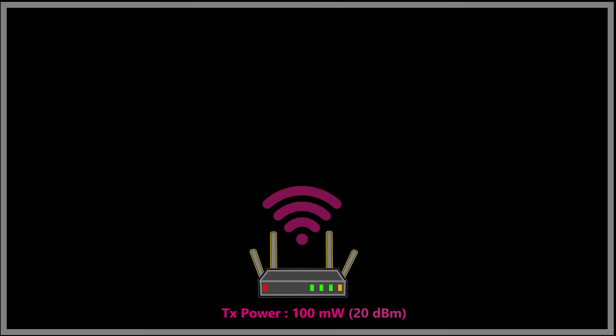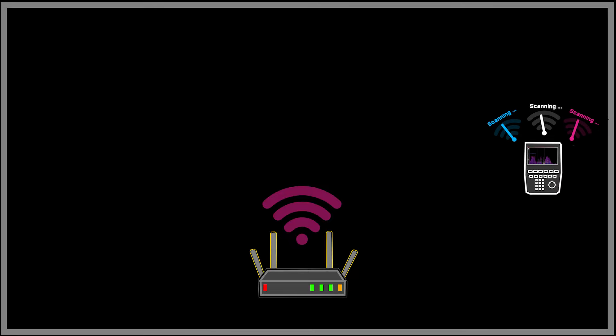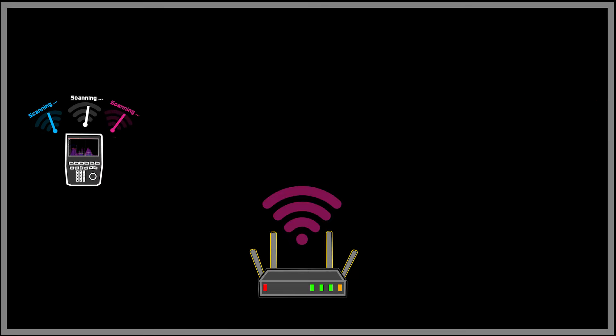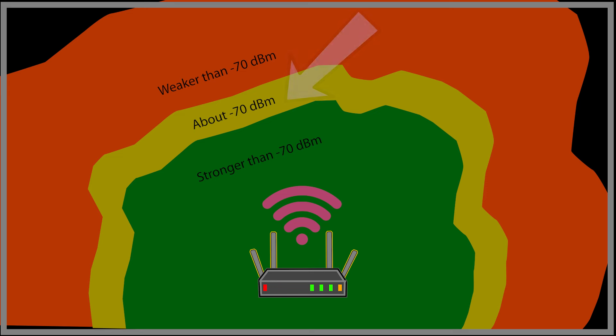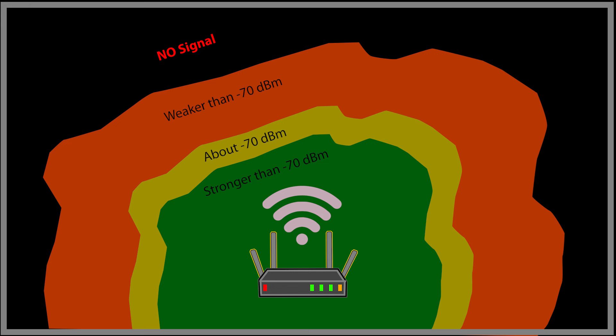The default transmit power here was 100 milliwatts. With this setup, when I walked around the building with a Wi-Fi analyzer in my hand, this was the signal strength of each location for the 2.4 GHz band. The Wi-Fi signal is pretty much useless beyond a certain point because anything weaker than minus 70 dBm is considered weak and not usable. For the 5 GHz band, the situation was even worse because higher frequency bands generally have lower range.